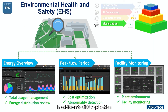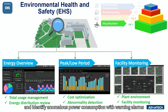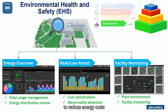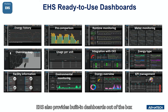In addition to the OEE application, EGN also offers the autonomous EHS application for manufacturers to check energy consumption of the whole plant in real time and identify anomalous power consumption with warning alarms to reduce energy costs and improve energy efficiency. The same as OEE application, EHS also provides built-in dashboards out of the box.